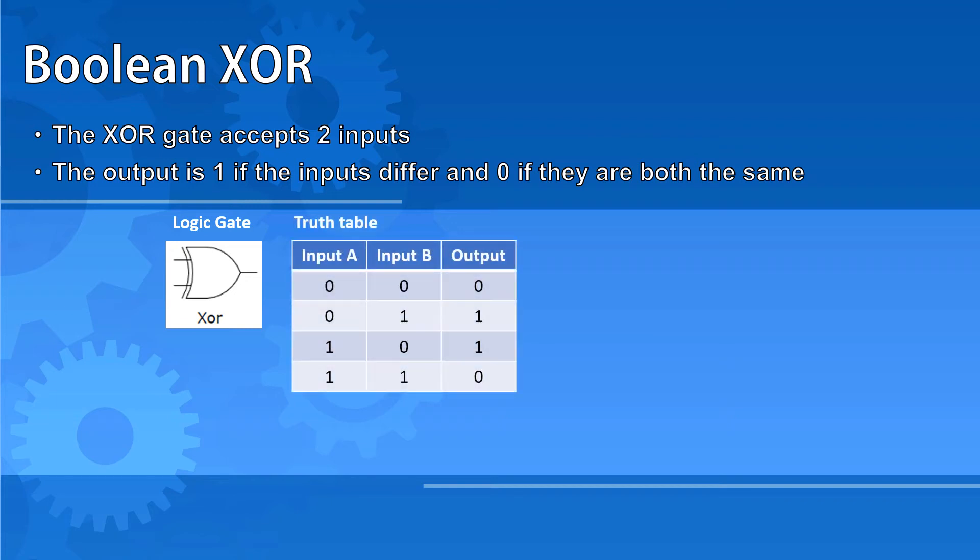With two inputs, we must once again consider the input combination possibilities of 0, 0, 0, 1, 1, 0, and 1, 1. With an XOR gate, the output is 1 only when the two inputs differ. The Boolean expression symbol for XOR is a circle with a plus inside it. So if input A and input B go through an XOR gate, it would be A followed by a circle with a plus in it, B.